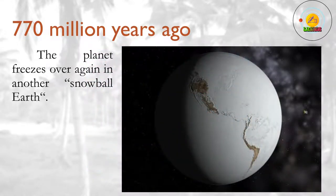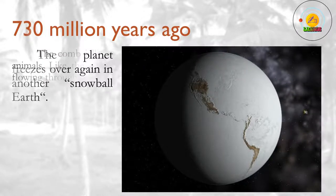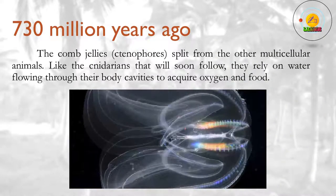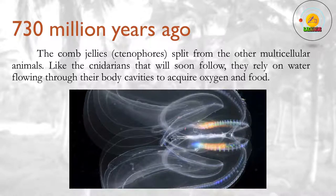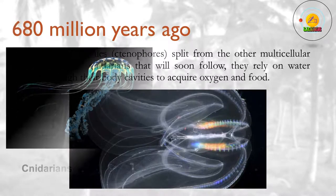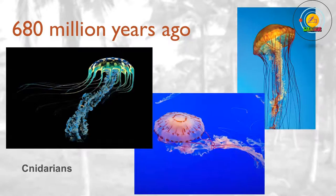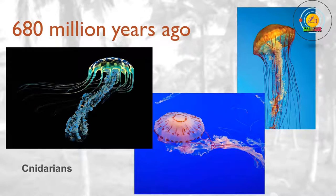770 million years ago? The planet freezes over again in another snowball Earth. 730 million years ago? The comb jellies, ctenophores, split from the other multicellular animals. Like the cnidarians that will soon follow, they rely on water flowing through their body cavities to acquire oxygen and food. 680 million years ago? The ancestor of cnidarians — jellyfish and their relatives — breaks away from the other animals, though there is as yet no fossil evidence of what it looked like.